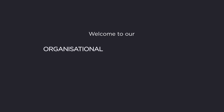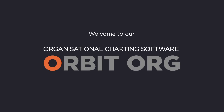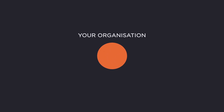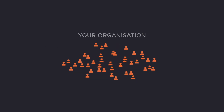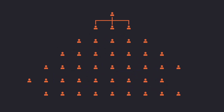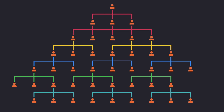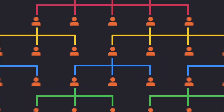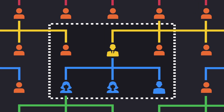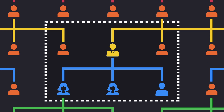Welcome to our organisational charting software, Orbit.org. It enables you to visualise the hierarchical reporting lines of your organisation from global views through to individual departments and roles.